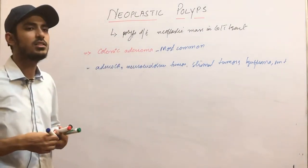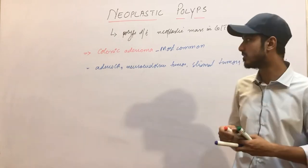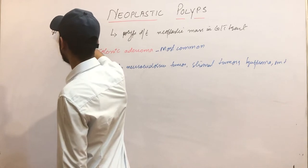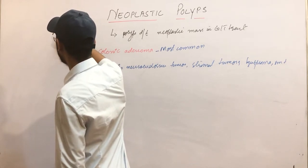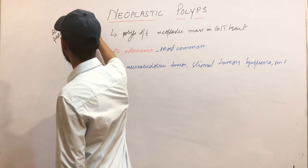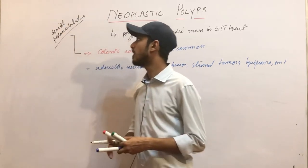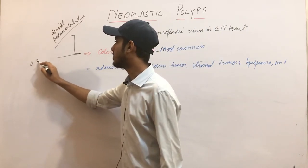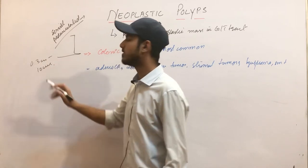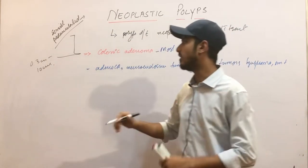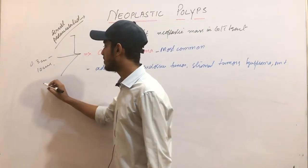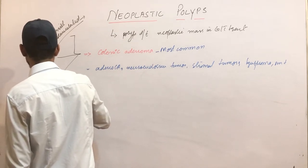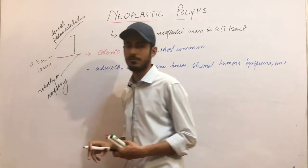Now we will be discussing the colonic adenomas in detail. These colonic adenomas may be sessile or pedunculated. Most commonly they are pedunculated, but they can be sessile as well. Their size ranges from about 0.3 centimeters to 10 centimeters — from small to large. Their surface or appearance is described as a velvety appearance or raspberry appearance.